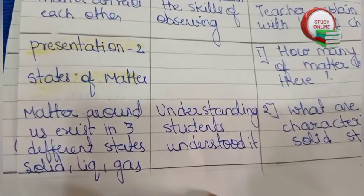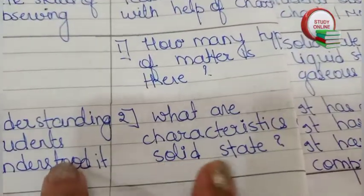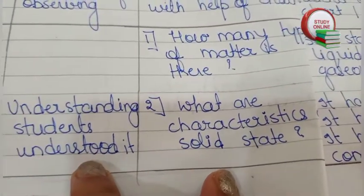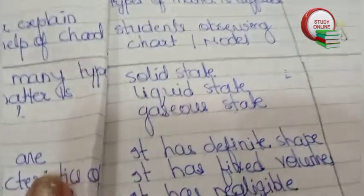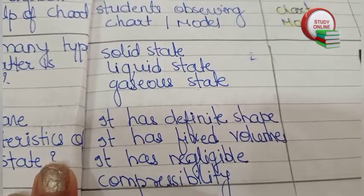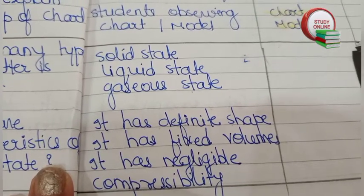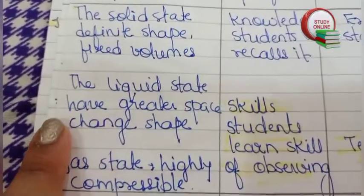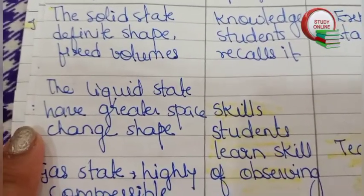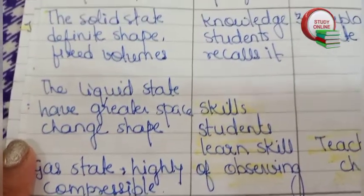Here you can see Presentation 2 — States of Matter. The related questions are: How many types of matter are there? What are the characteristics of solid state? Here are the expected answers we expect from students. Here is the blackboard work. This is how we make our lesson plan.